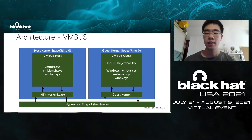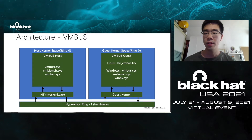The next important component is the VMBus component. VMBus exists in Ring Zero level of both the host machine and guest machine. It is used for data transmission between the guest and host. VMBus uses VM call instruction and interrupt instruction technology to implement notification communication between guest and host.